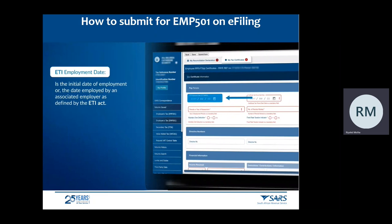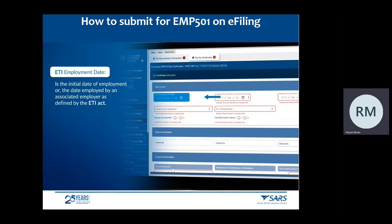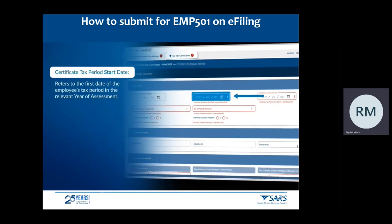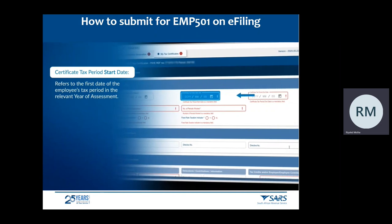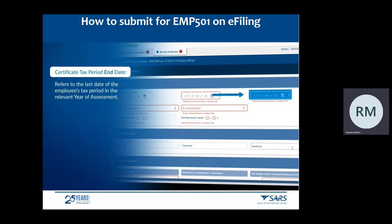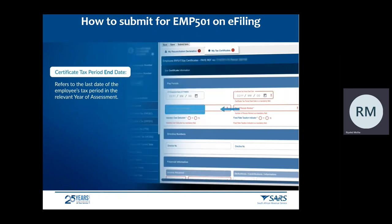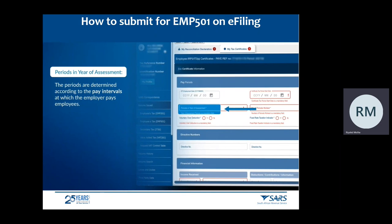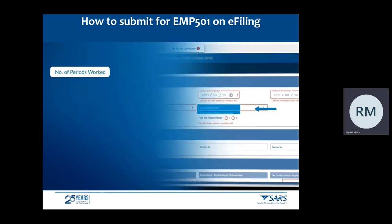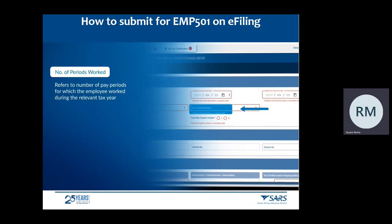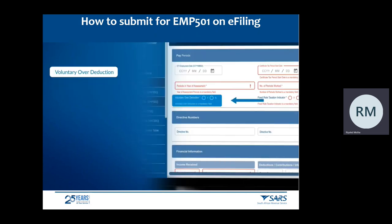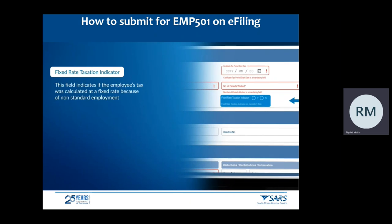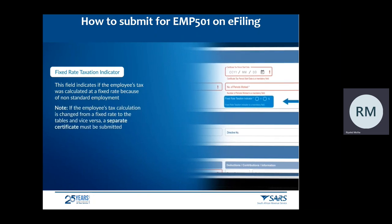ETI employment date is the initial date of employment or the date employed by an associate employer as defined by the ETI Act. Certificate tax period start date refers to the first date of the employee's tax period in the relevant year of assessment. Certificate tax period end date refers to the last date of the employee's tax period in the relevant year of assessment. Periods in year of assessment are determined according to the pay intervals at which the employer pays employees. Number of periods worked refers to the number of pay periods for which the employee worked during the relevant tax year. Voluntary over-deduction indicates if the employee requested over-deduction of PAYE. Fixed rate taxation indicator shows if the employee's tax was calculated at a fixed rate due to non-standard employment. Note: if the employee's tax calculation is changed from a fixed rate to the tables or vice versa, a separate certificate must be submitted.